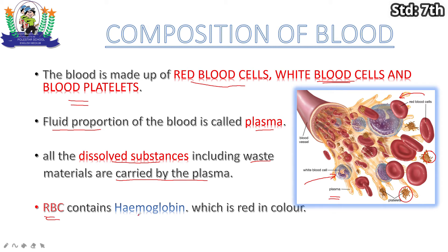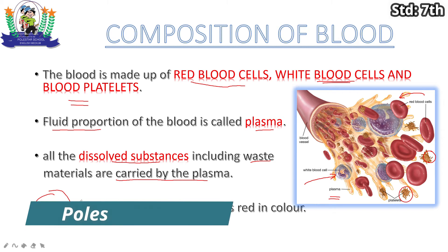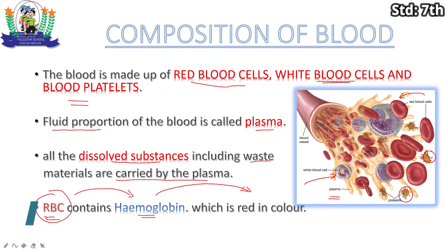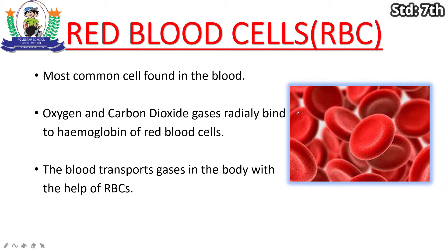Red blood cells contain hemoglobin, which gives them their red color. As you can see, the center part of the red blood cell is dipped — it has a biconcave shape. Red blood cells transport oxygen and carbon dioxide through hemoglobin, enabling gas exchange in the body.